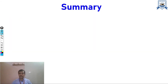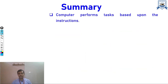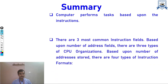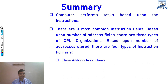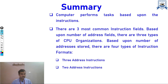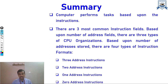In summary: computers perform tasks based on instructions given by the user. There are three common instruction fields: operation, address, and mode. Based on the address field there are three CPU organizations, and based on the number of addresses stored there are four types of instruction formats. Three-address instructions have an opcode, mode field, and three addresses in memory or registers. Two-address instructions have two address fields. One-address instructions use the accumulator implicitly for one operand. Zero-address instructions use stack organization.